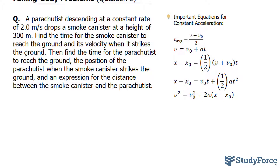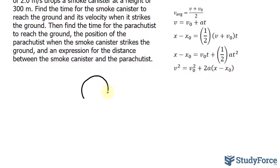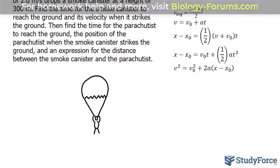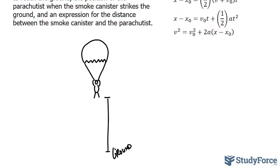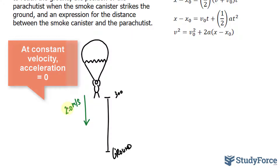Before we start, let's try to paint a picture of what's happening. So that is the parachute, and hanging from that parachute is the parachutist, 300 meters from the ground. The parachutist tosses a smoke canister. That's the ground right there, 300 meters from the ground. Mind you, this parachutist is constantly going down at 2.0 meters per second.